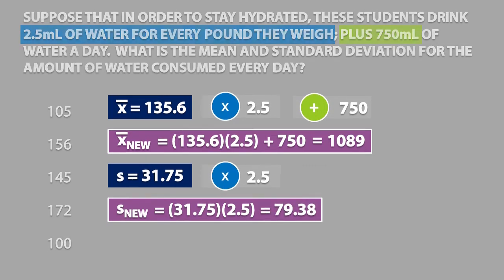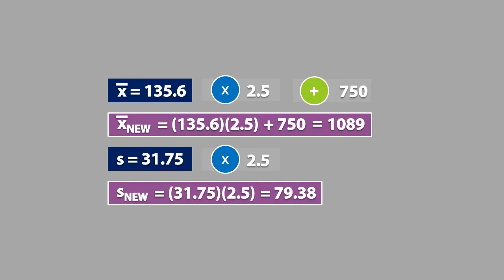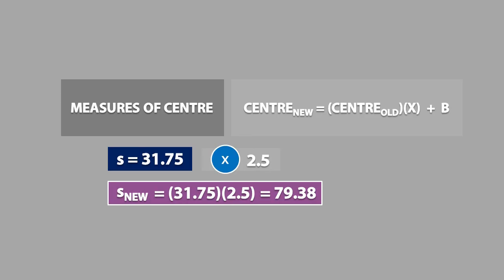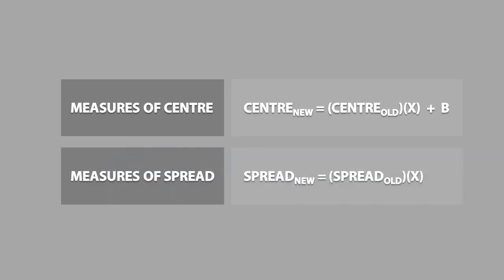Based on these calculations, we can extract a general formula for the transformation of each type of measure. Measures of center can be represented as: new center = old center × multiplicative constant + additive constant. On the other hand, measures of spread can be represented as: new spread = old spread × multiplicative constant.